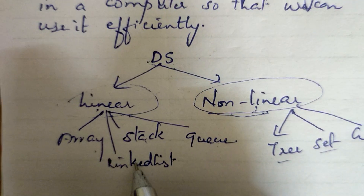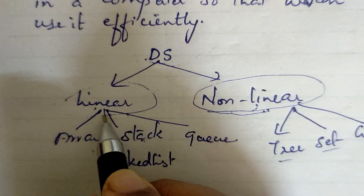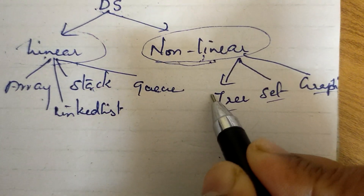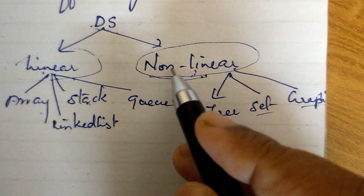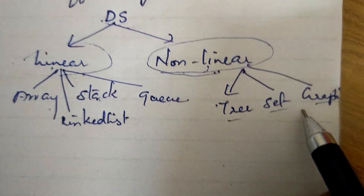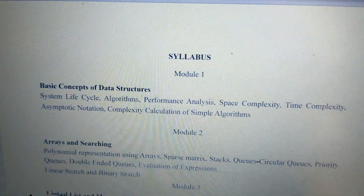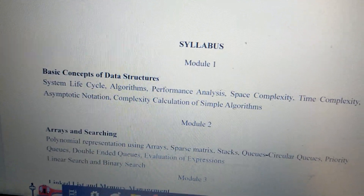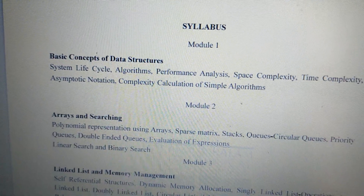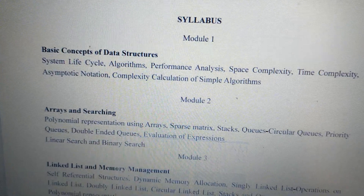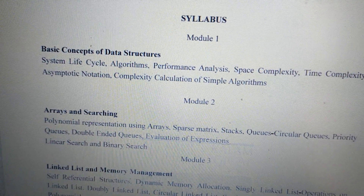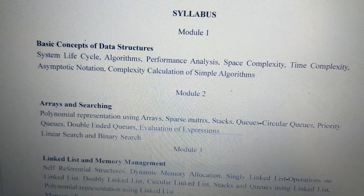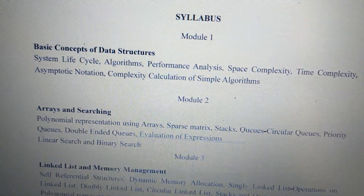Array, linked list, stack, and queue are linear data structures. Tree, graph, and hash table are non-linear data structures. This is our syllabus. Our first five modules cover basic concepts of data structures — first we will learn system life cycle, then algorithm, then performance analysis, space complexity, and so on.